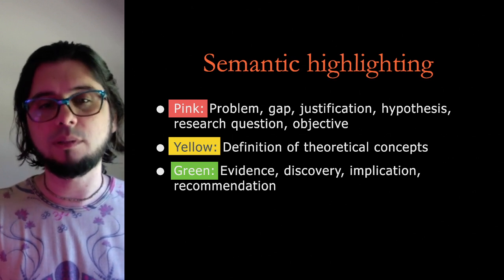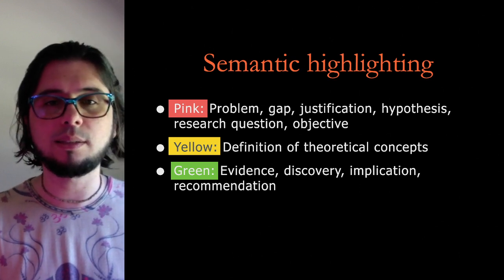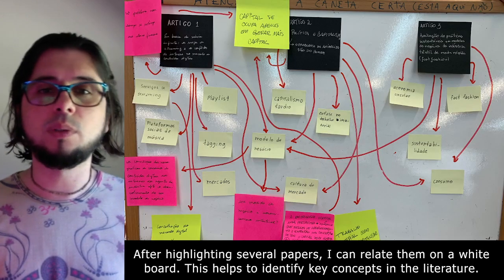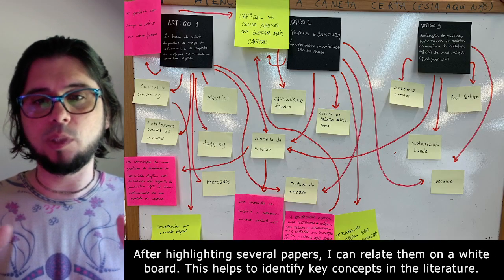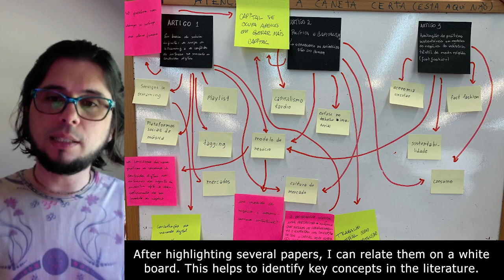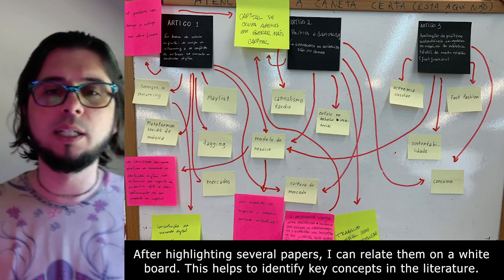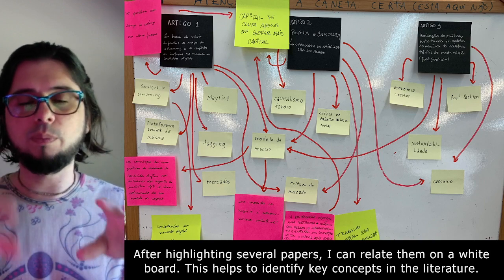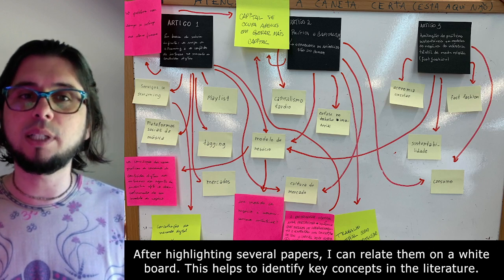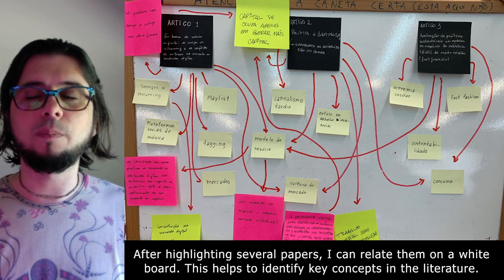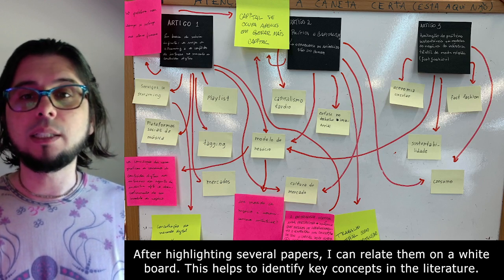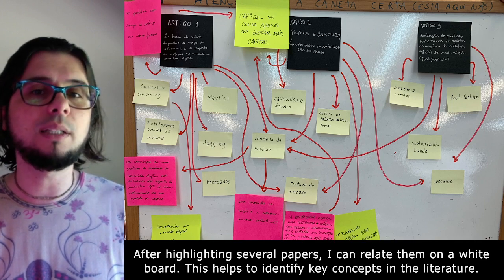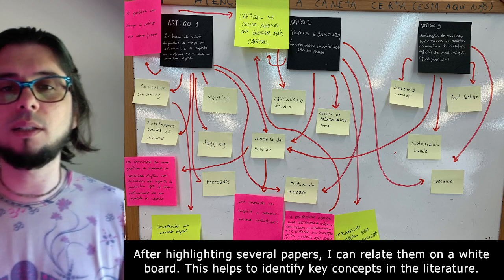After those highlights are put on the paper, you can extract them and create different ways of visualizing. What I typically suggest to my design research students is to extract the main parts of papers and put them onto post-its with the same color code they used to highlight. Then you can compare, for example, three articles — their titles on black post-its, major theoretical concepts laid out in the middle — and you can see that some papers use the same theoretical concepts, then start discussing them and finding common threads.